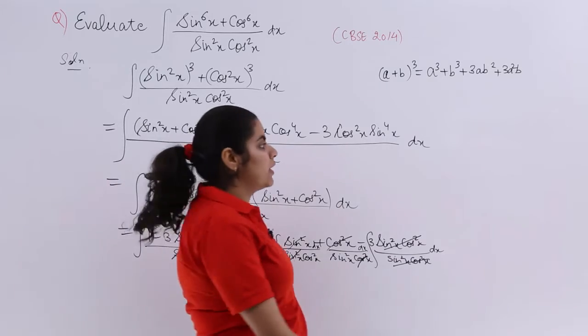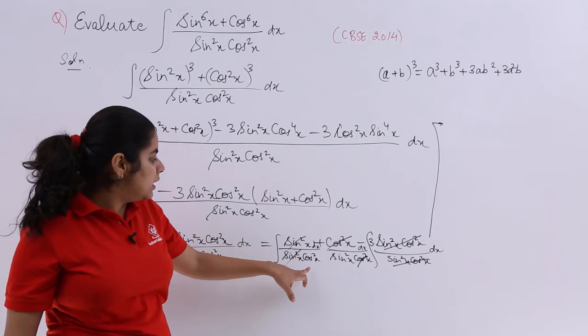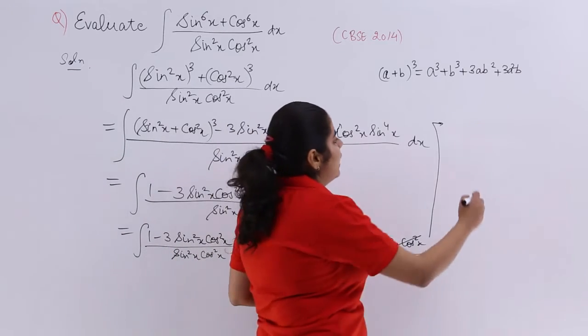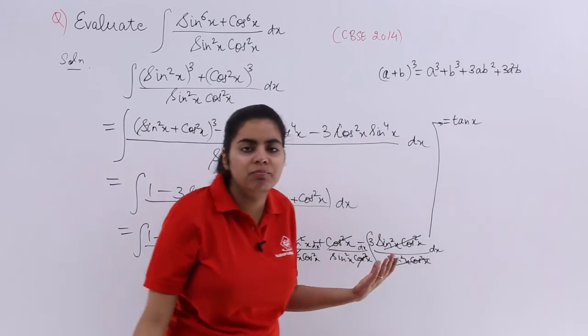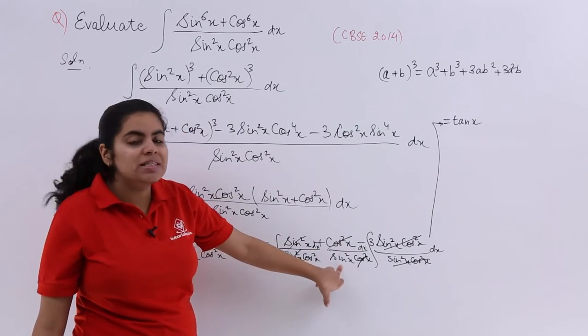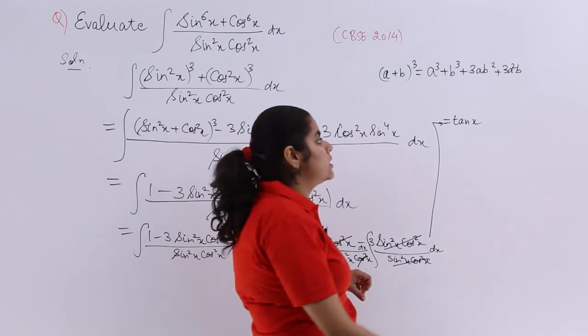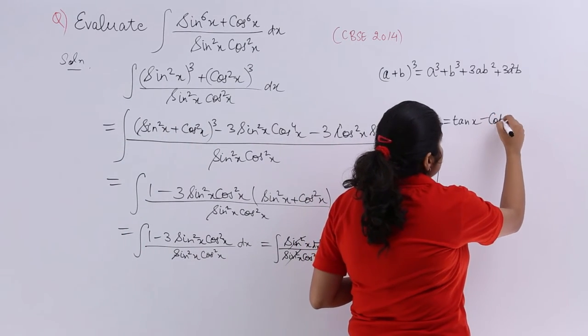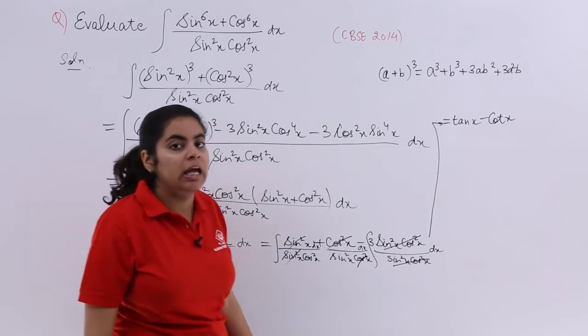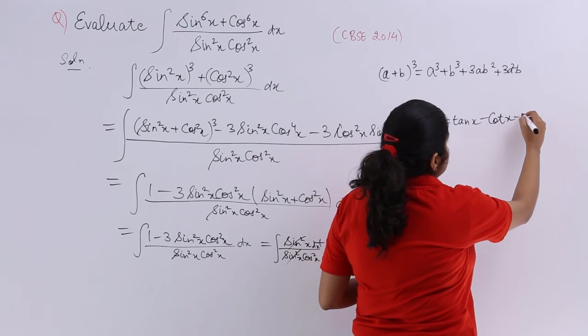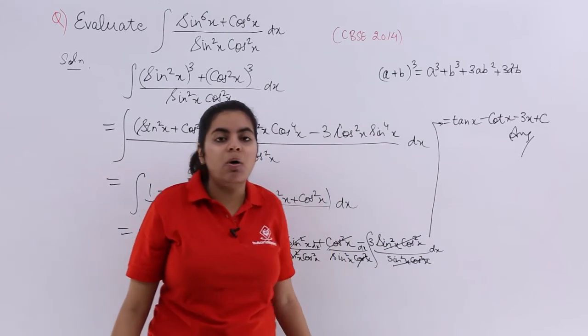So what is the last step? The last step left is only the evaluation of these simple integrals. 1 upon cos square x is secant square x. Integration of secant square x dx means tan x. Plus 1 upon sin square x is cosecant square x. Integration of cosecant square x dx is minus cot x. Last but not least, minus 3. Integration becomes minus 3x plus the constant of integration that is c. So the answer is tan x minus cot x minus 3x plus c.